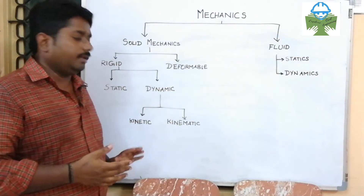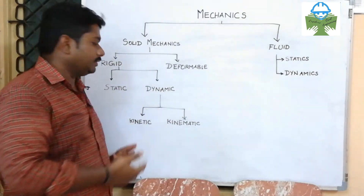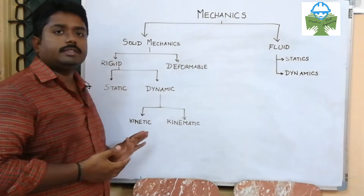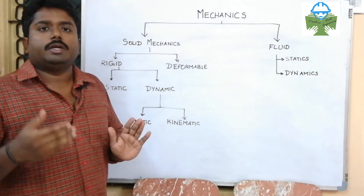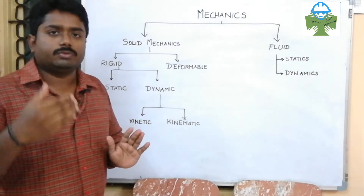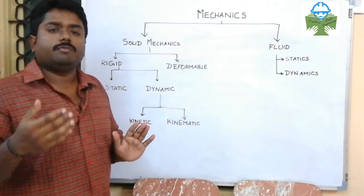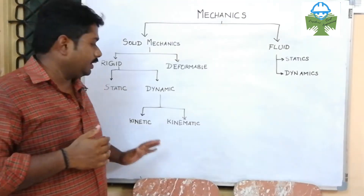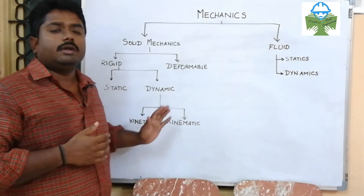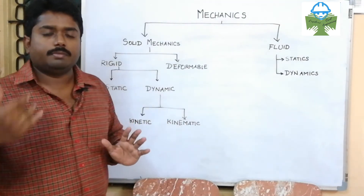Dynamics has two categories: kinetics and kinematics. In kinetics, an object is in motion and an external force is applied — the external force acting on the field is kinetic. In our calculation, the external force involves more than one force to analyze.